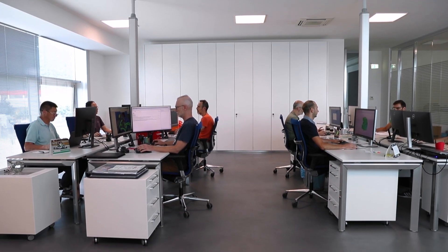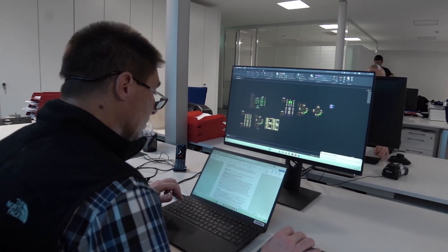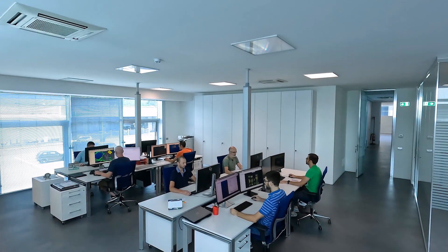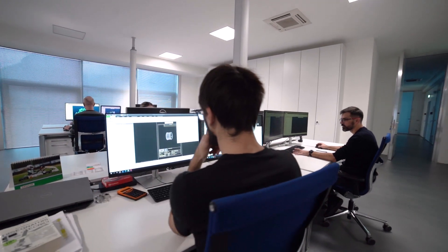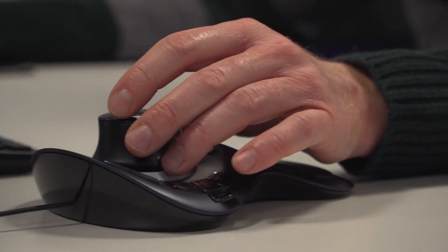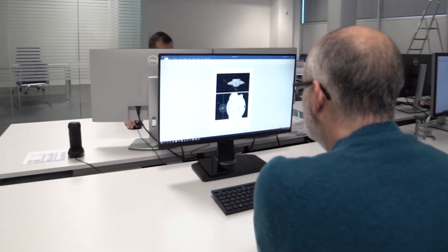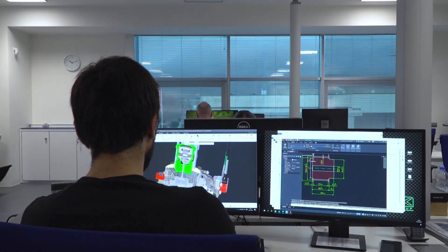Every single engine in the OTK Kart Group's engine division takes shape in technical departments, even before it is manufactured, which during the development process of new products works closely with the OTK Kart Group's racing department, the Tony Kart Racing Team, in order to test new solutions before they are manufactured as a standard and placed on the market.